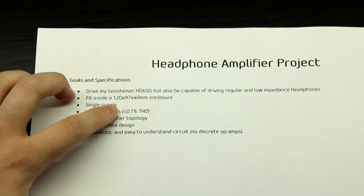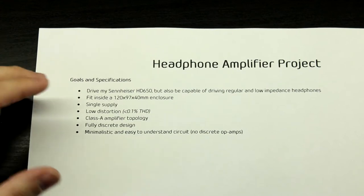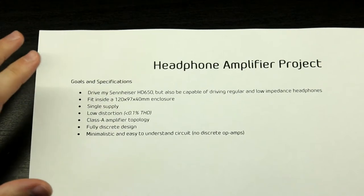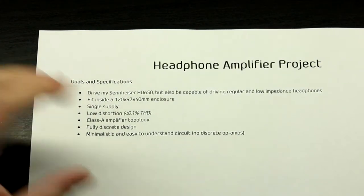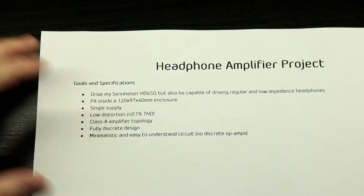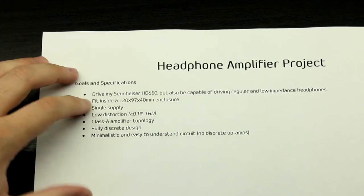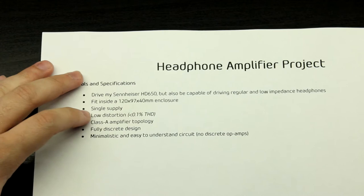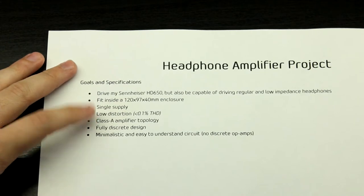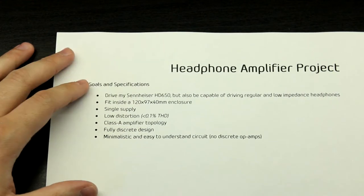It should fit inside a 120 by 97 by 40 millimeter enclosure — one of those eBay black anodized aluminium enclosures, just those black project boxes. It should be powered from a single supply, because I want to put everything inside and it's a small enclosure — I don't want two transformers. It should have low distortion: less than 0.1% THD. 0.1% distortion is pretty acceptable — you can't really hear less than this.